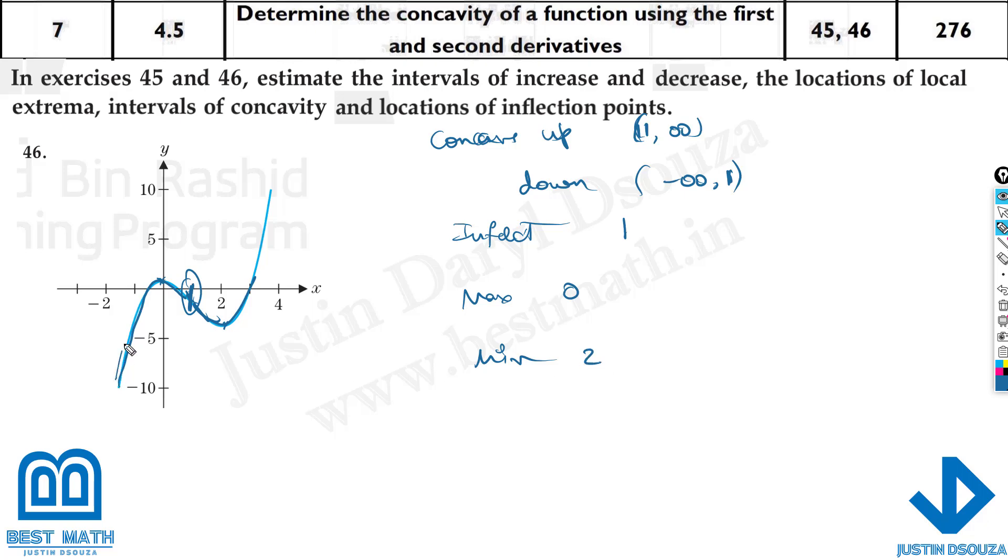Where is it increasing? It's increasing from minus infinity till 0, and again from 2 until infinity. Whereas decreasing is only from 0 to 2. That's the only decreasing point.